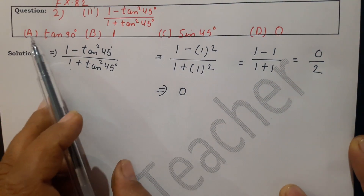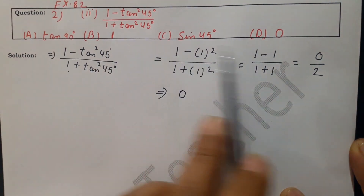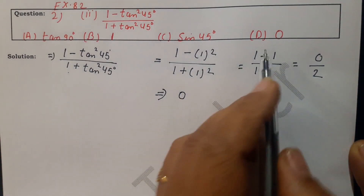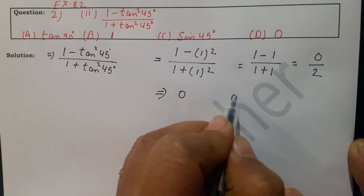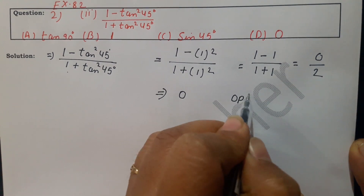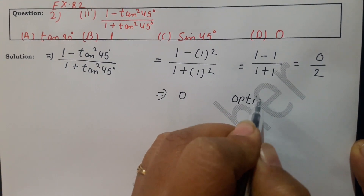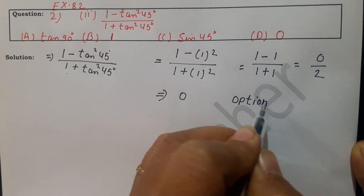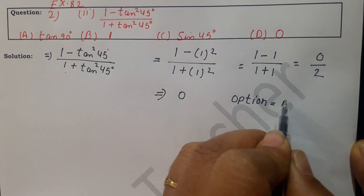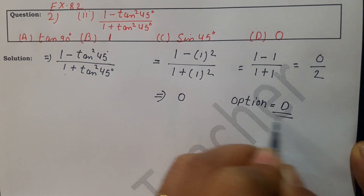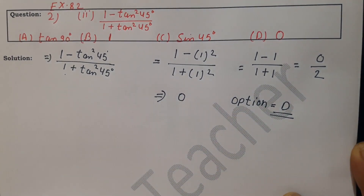So the answer is 0. Among these 4 options, option D is our right answer.